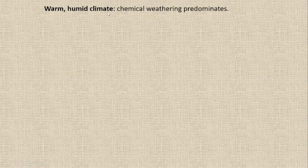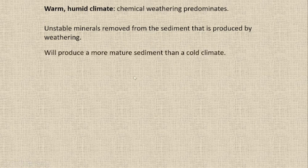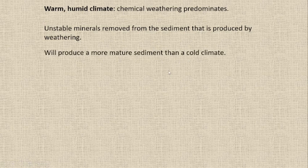When we take a warm and humid climate condition, chemical weathering predominates. That condition will affect unstable minerals — for example, minerals like feldspar are removed from sediments by weathering. So this warm and humid condition will remove all unstable minerals from the product and will produce a mature type of rock — more mature sediments than a cold climate.